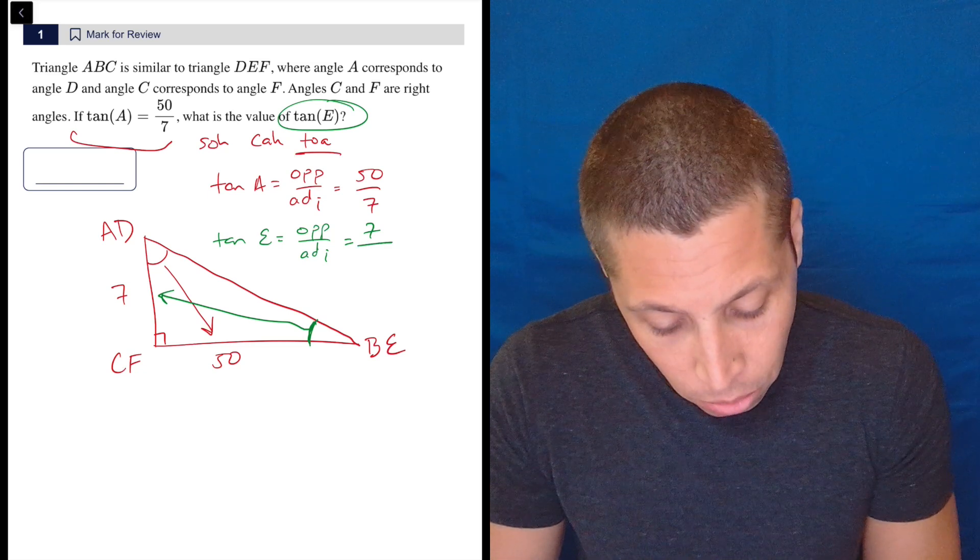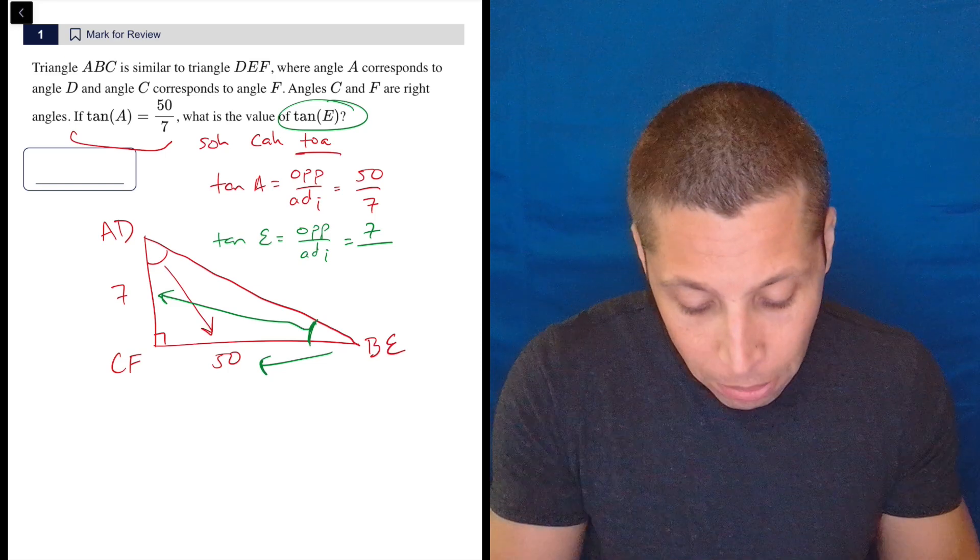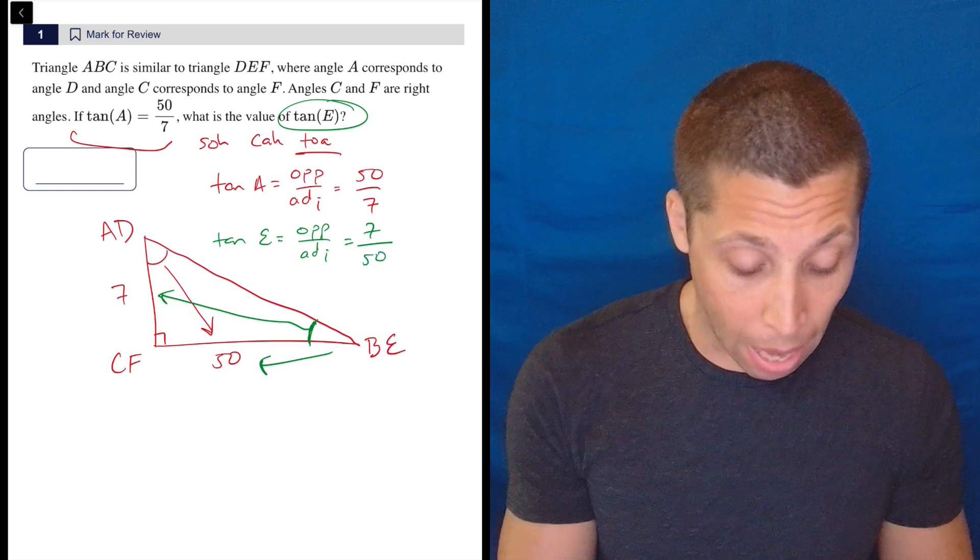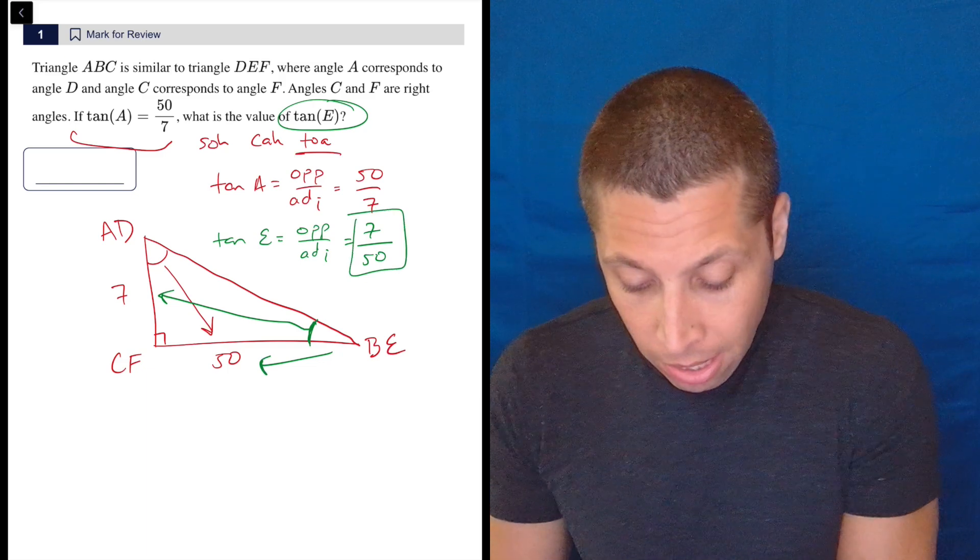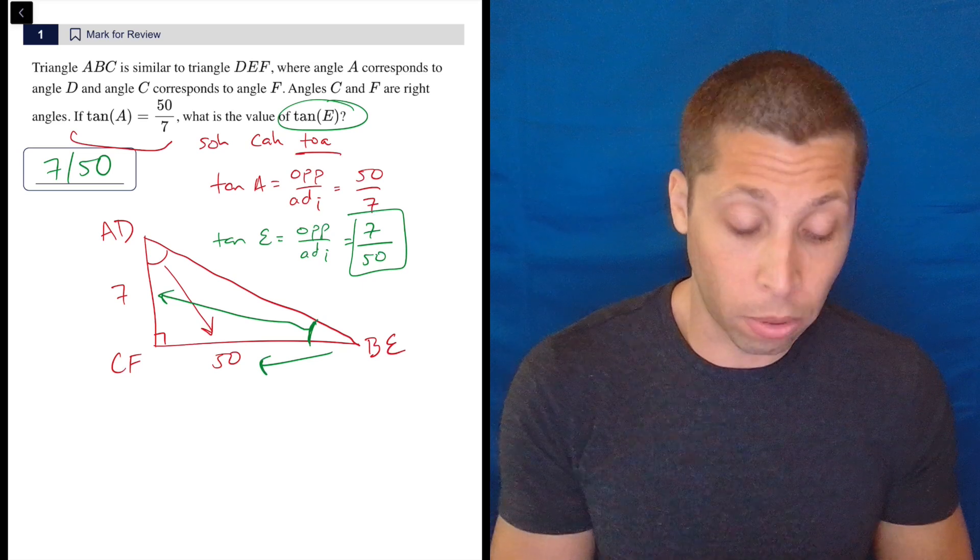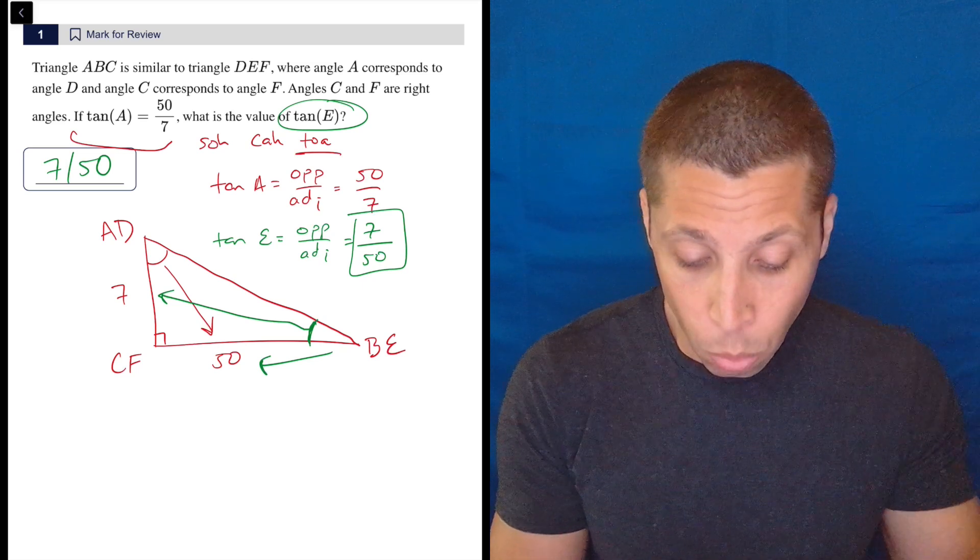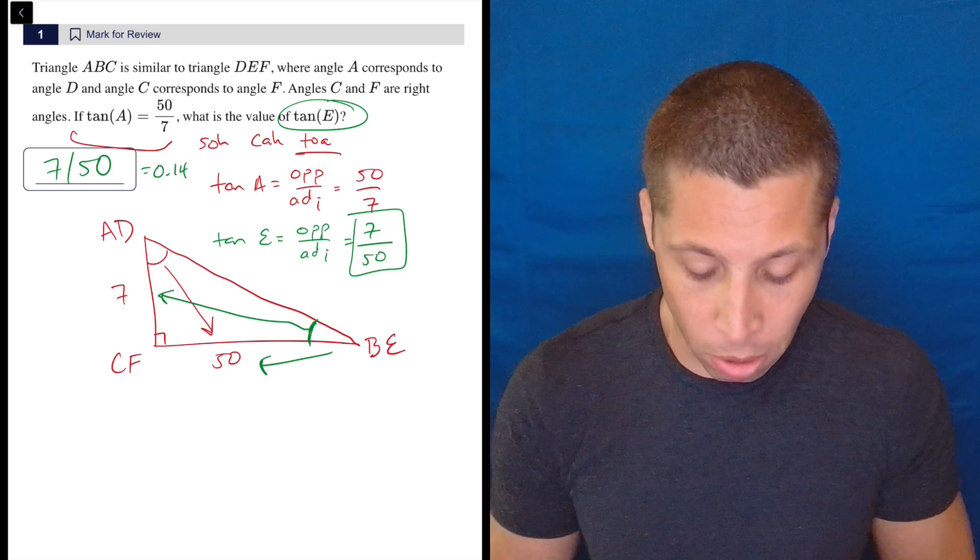Now 7, which was the adjacent side before, is now the opposite side because we're at a different spot. The adjacent side is flipped - now adjacent to angle E is the 50. So no reason to get the hypotenuse. 7 over 50 is a perfectly valid answer, or 0.14 exactly.